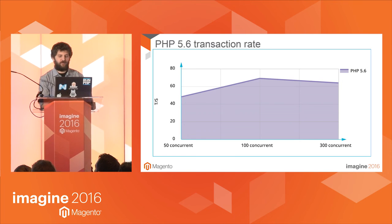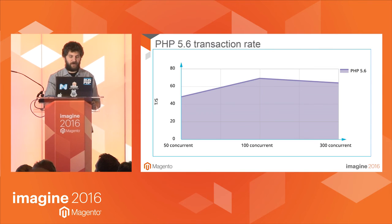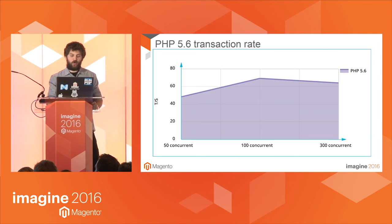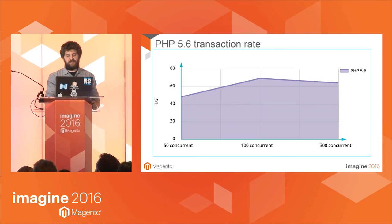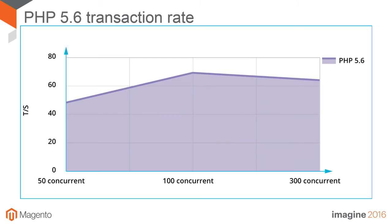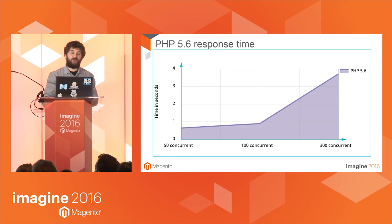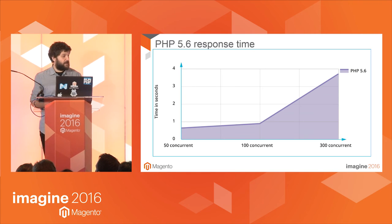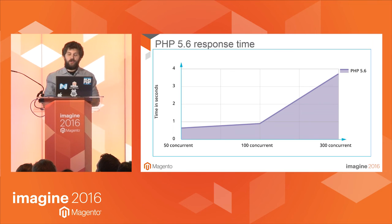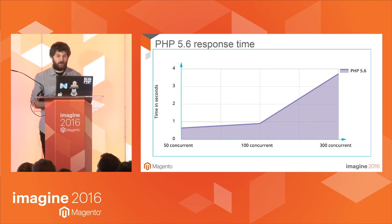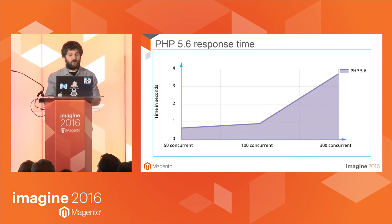The first test compares Magento 2 performance using PHP 5.6 both with and without Varnish. For PHP without Varnish, the transaction rate was almost 50 transactions per second for 50 concurrent users, almost 70 for 100, and the same number for 300 users. The performance deteriorated when 300 concurrent users were hitting the server, spiking response times to almost four seconds. If we only used the first two graphs, we would have missed this conclusion because the transaction rate and transactions handled were normal and the results between 100 and 300 concurrent users were quite similar.